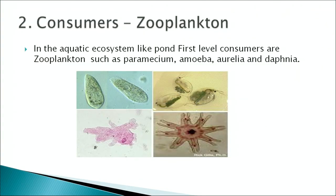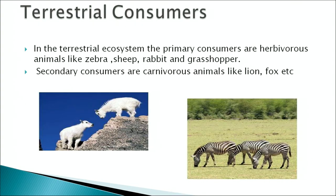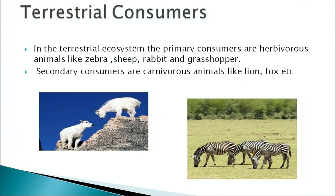In an aquatic ecosystem the main consumers are zooplanktons, which are herbivores, such as Paramecium, Amoeba, Aurelia, and Daphnia. In the terrestrial ecosystem, the primary consumers are herbivorous animals such as zebra, sheep, rabbit, and grasshoppers. The secondary consumers, which depend upon the primary consumers, are carnivorous animals such as lion and fox.